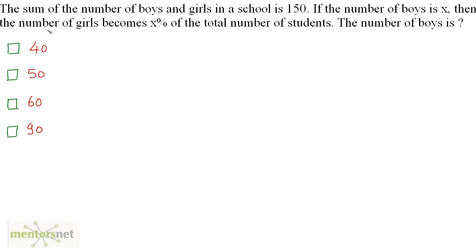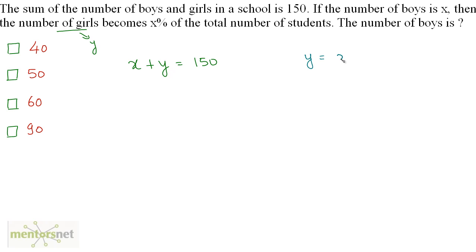The sum of the number of boys and girls in a school is 150. If the number of boys is X, then the number of girls becomes X percent of the total number of students. Let the number of girls be Y. So X + Y = 150. Also, Y = X% of 150 = (X/100) × 150 = 3X/2.